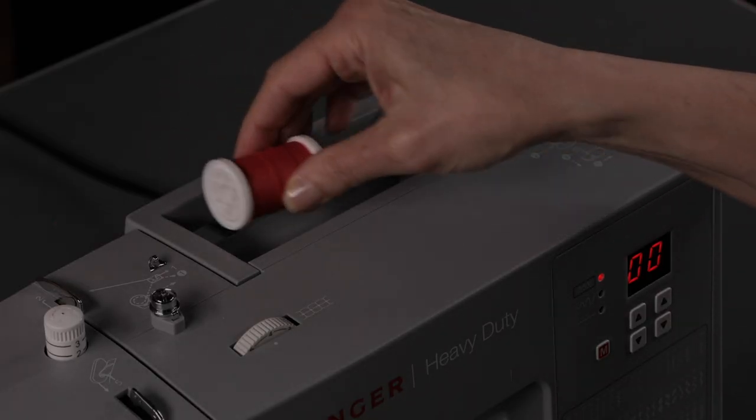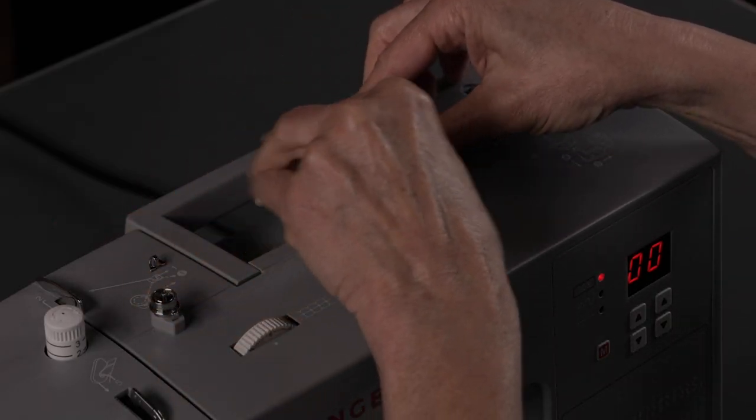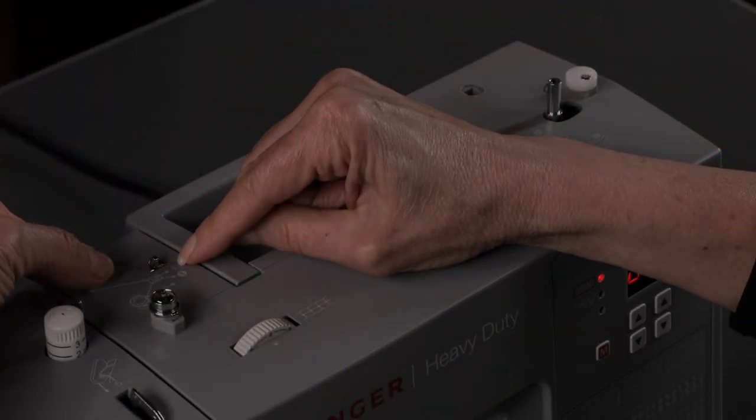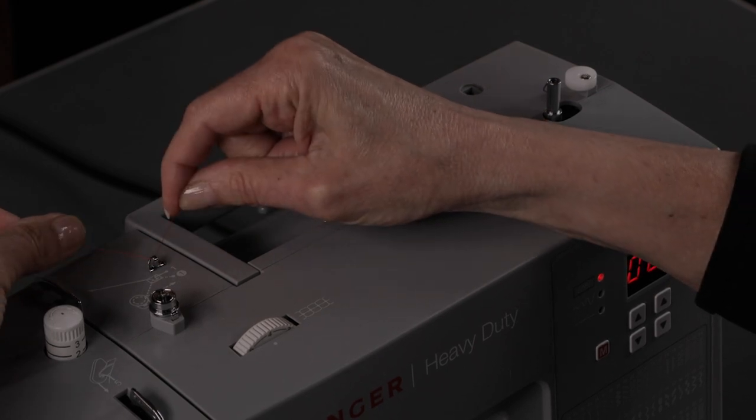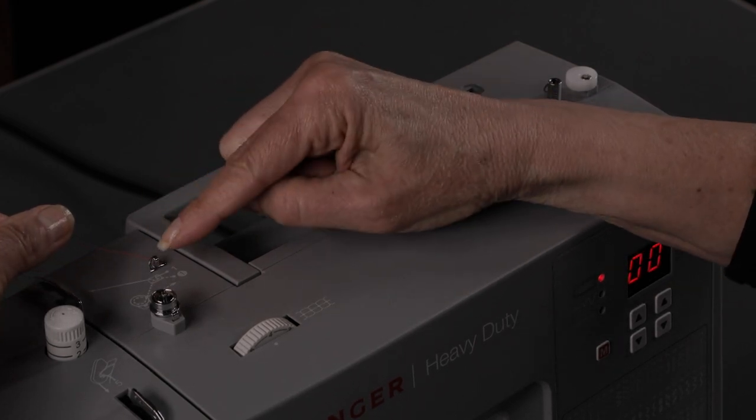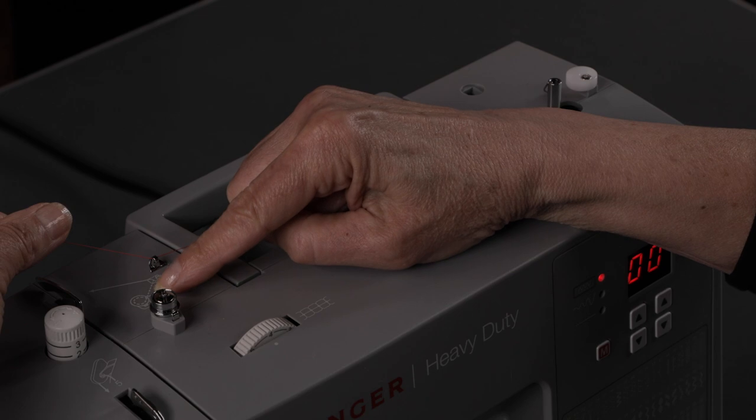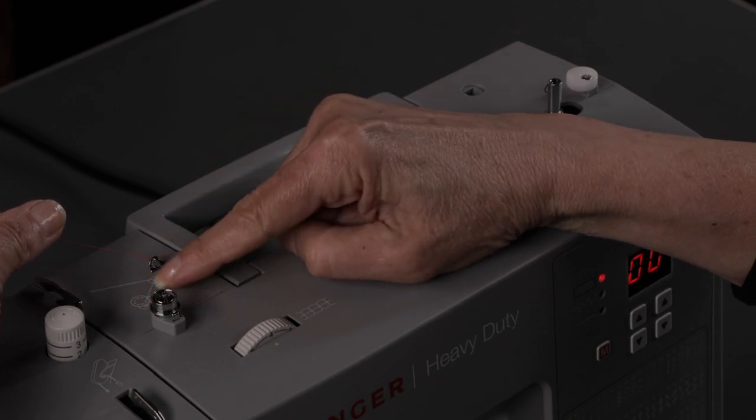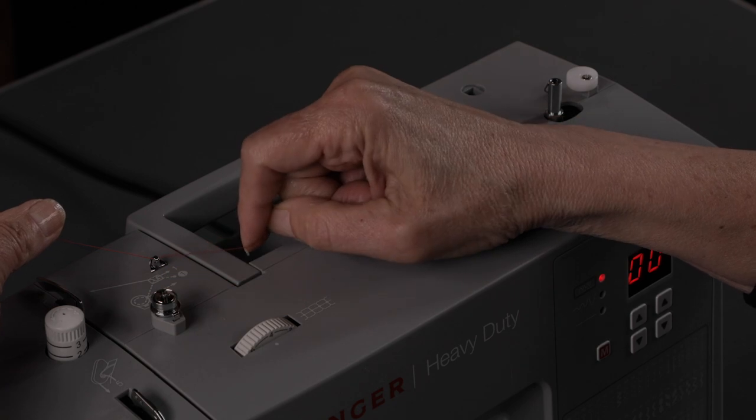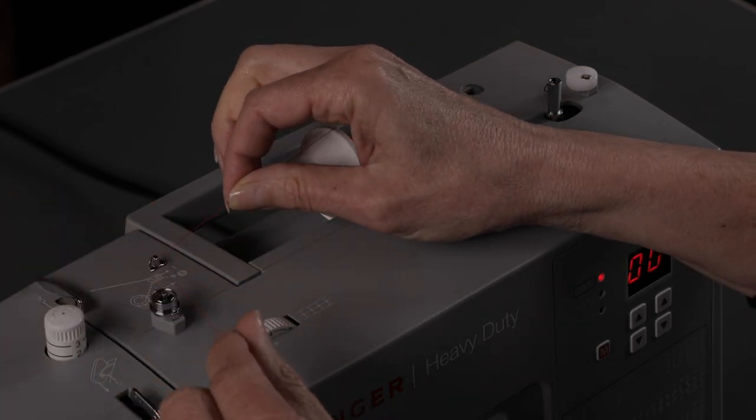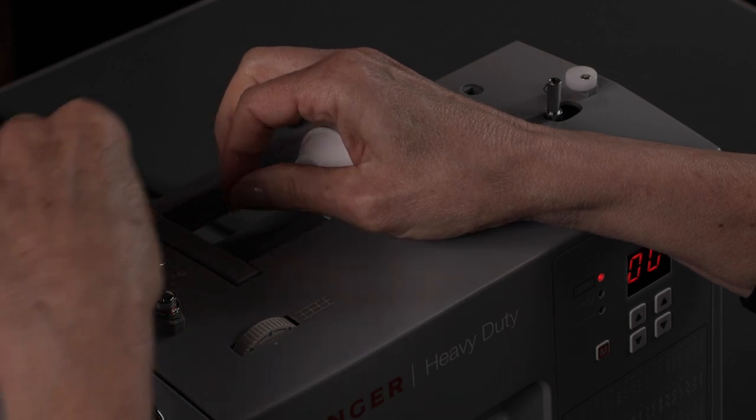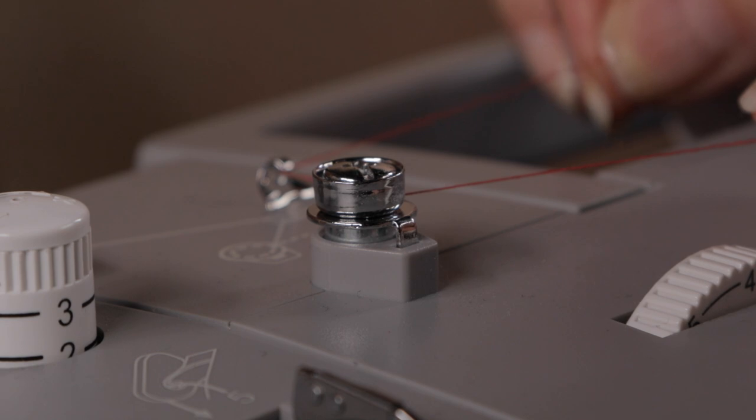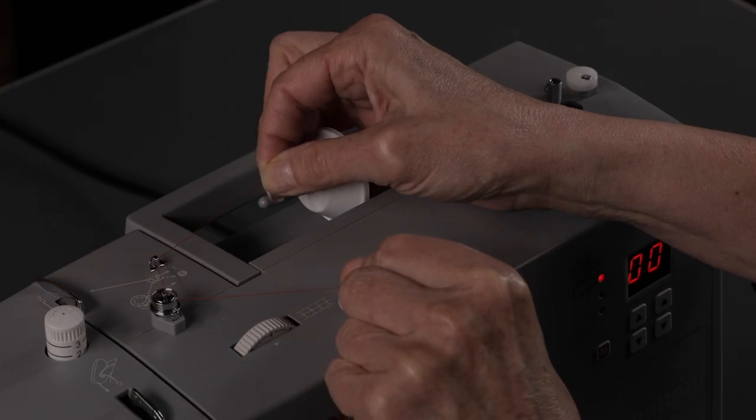Place your thread on your spool pin and put the spool cap on in front of that. Take your thread and bring it into this first thread guide, snapping it in from front to back. The bobbin winding path is indicated on the top of your machine with this dashed or dotted line. Follow it to the bobbin winding tension disc. Bring it around the bobbin winding tension disc like this and give that a little pull, snugly placing it underneath those discs.